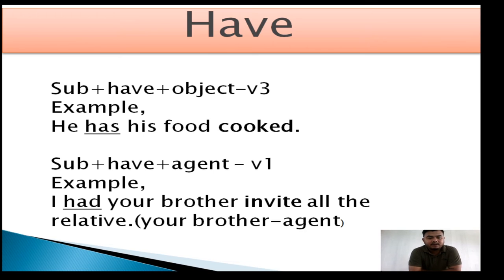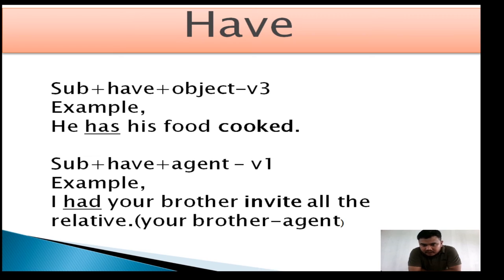Another rule: Subject + have + agent. If 'have' is followed by an agent — meaning a person — then the verb must be verb 1. For example: 'I had your brother invite all the relatives.' Here 'had' is the causative verb (past form of 'have'). 'Your brother' is the agent — a person — so the verb must be verb 1, which is 'invite.'